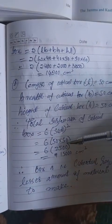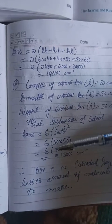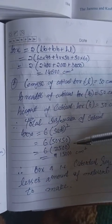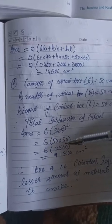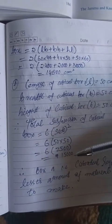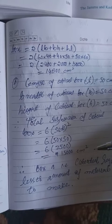So this equals 6 into 50 into 50. That's 6 into 2500, which equals 15,000 centimeters square.